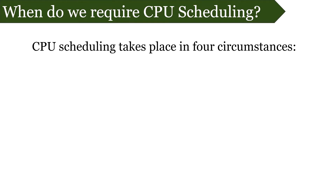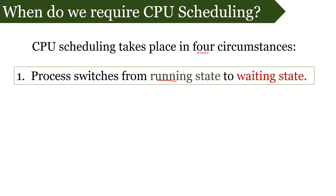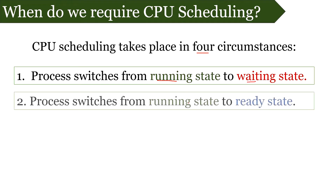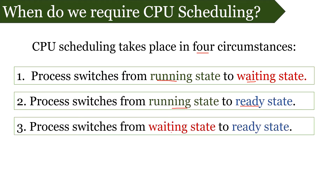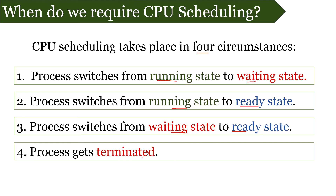CPU scheduling takes place under four circumstances: when a process switches from a running state to a waiting state, from a running state to a ready state, from a waiting state to a ready state, or when the process finally gets terminated. In the first and fourth scenarios, the CPU scheduler doesn't have a choice — it simply has to select a new process from the ready queue. However, in the second and third scenarios, the CPU scheduler can choose which process to schedule.